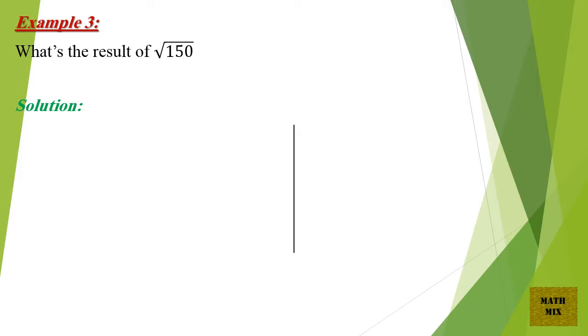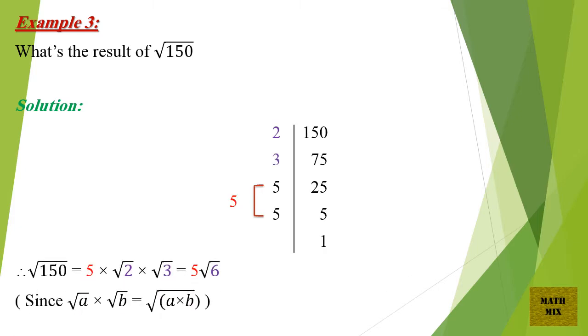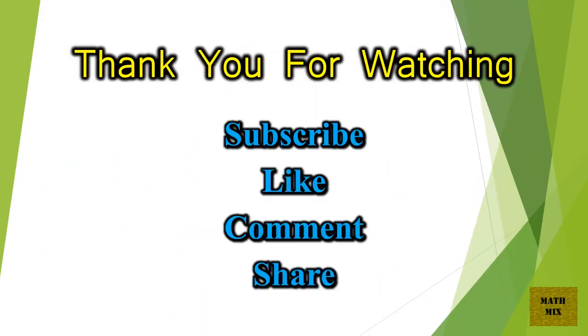Example 3: What's the result of the square root of 150? Solution: Therefore, the square root of 150 equals 5 times the square root of 2, times the square root of 3, which equals 5 square root of 6. Since the square root of A times the square root of B equals the square root of A times B.